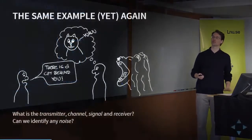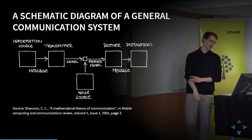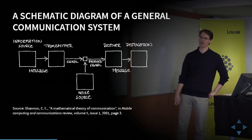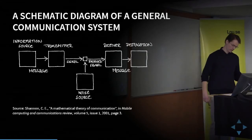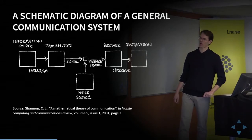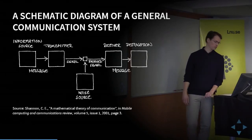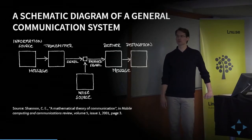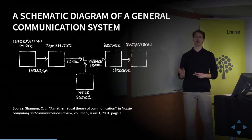Now we know enough to move into a more computer-science-friendly model: Shannon's schematic diagram of the general communication system, from the 1940s, which still holds today. To the far left we have an information source — the thing that wants to transmit the message. The source hands the message to the transmitter, which forms it into a signal that can be sent over the channel. In the middle of the channel, the signal gets mixed with some sort of noise, which may change the signal, so the received signal might not be exactly the same as the signal sent.